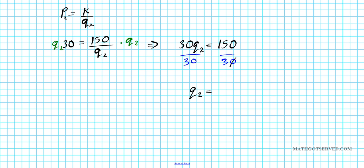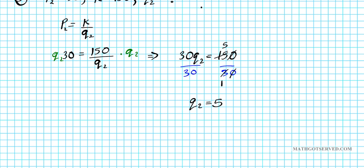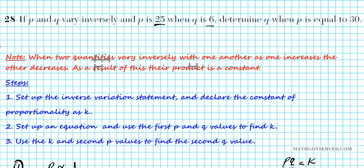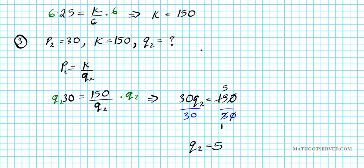And that tells us the value of Q when P is the value of 30. So Q2 is equal to, divide by 10. The zeros cancel out. Three goes into itself once. Three goes into 15 five times. Q2 equals five. So our answer is, oh, actually, this is a free response question. I'm sorry. So there goes our final answer. Q2 is equal to five.